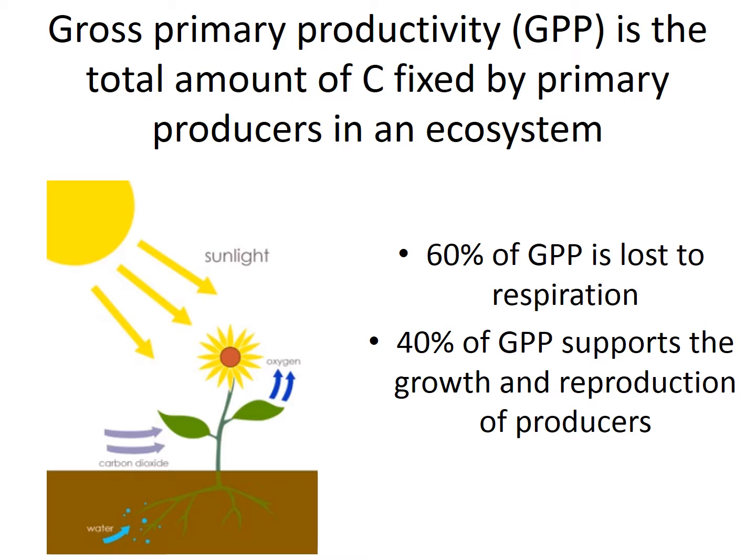That 1% of light energy that goes to photosynthesis is what's called gross primary productivity (GPP), which is the total amount of carbon fixed by primary producers in the ecosystem. In fact, 60% of that 1% in GPP is lost to respiration, and only 40% actually supports the growth and reproduction of producers.